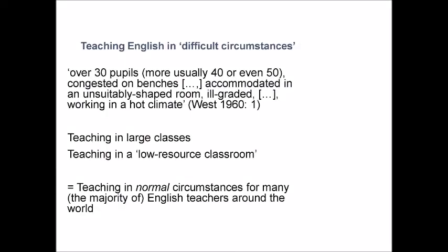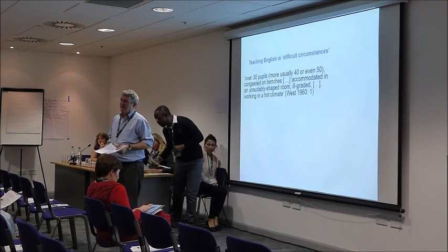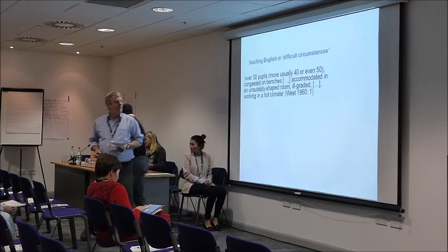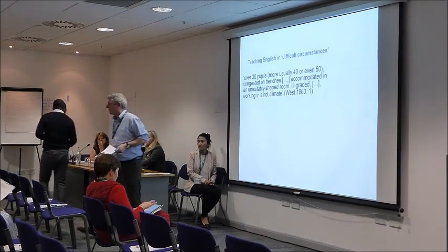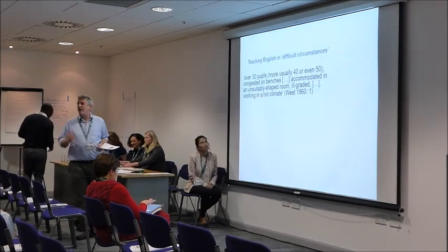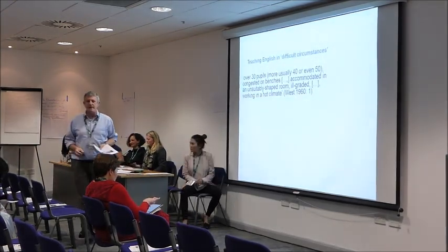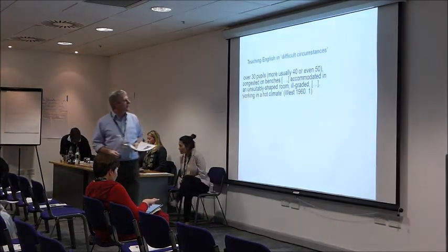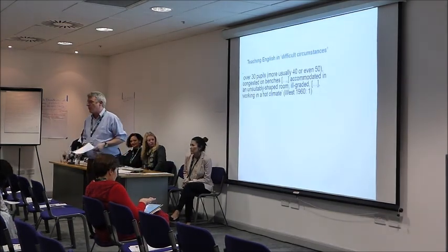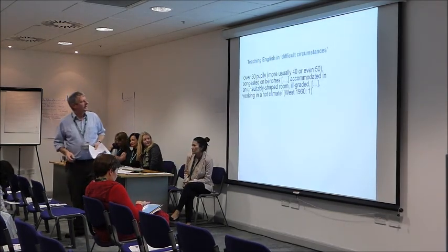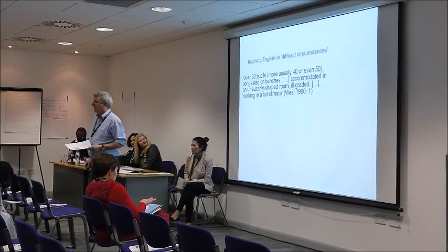Teaching English in Difficult Circumstances — that's the title of a book by Michael West, published in 1960. He defined difficult or unfavourable circumstances as over 30 pupils, more usually 40 or even 50.